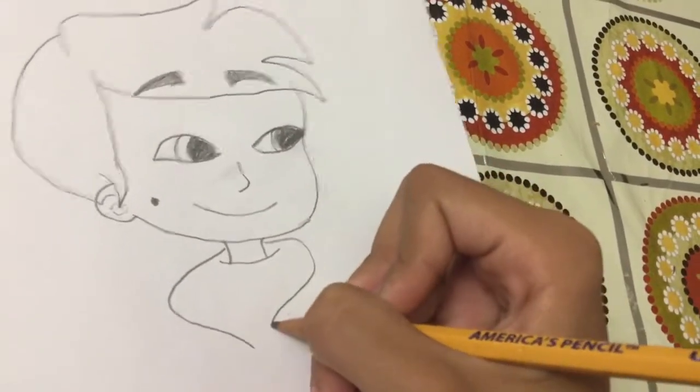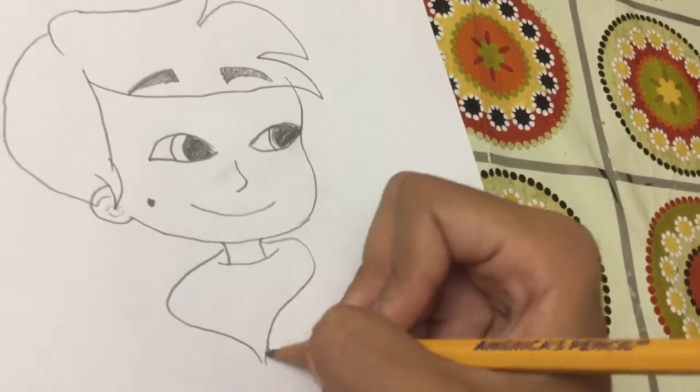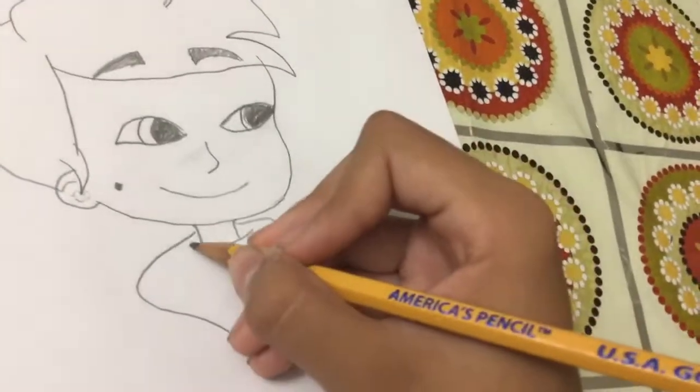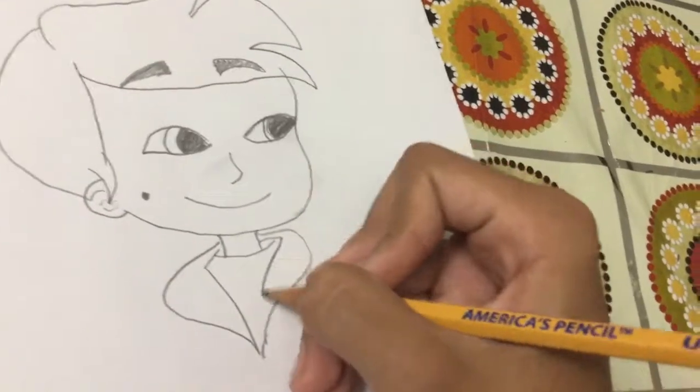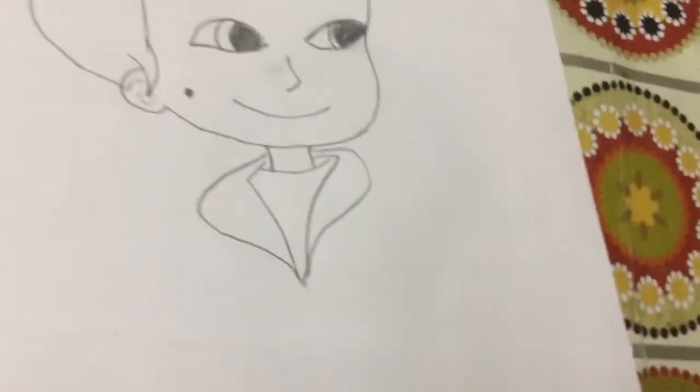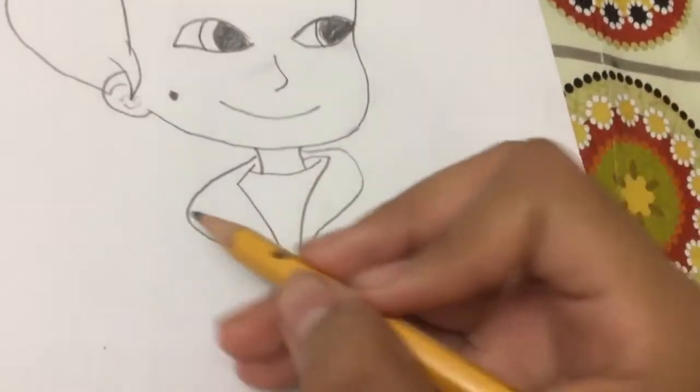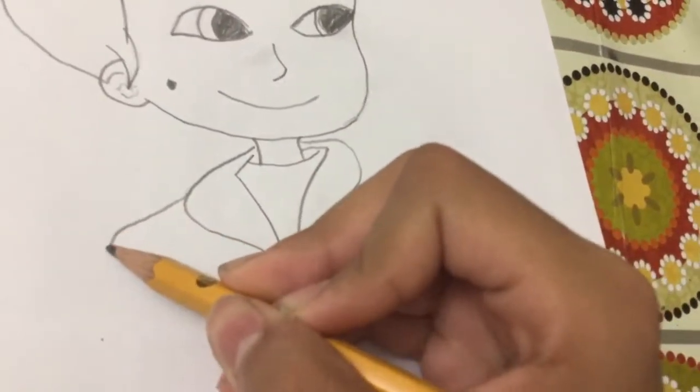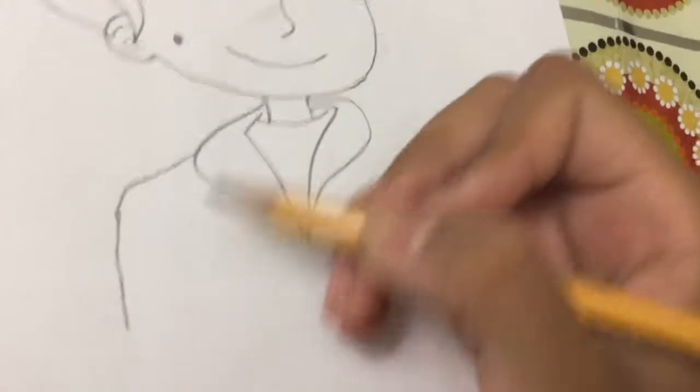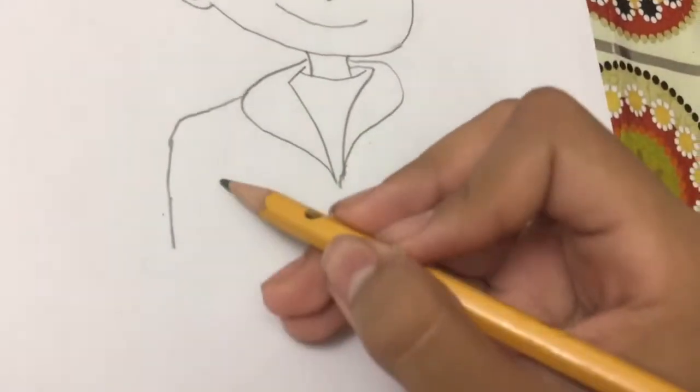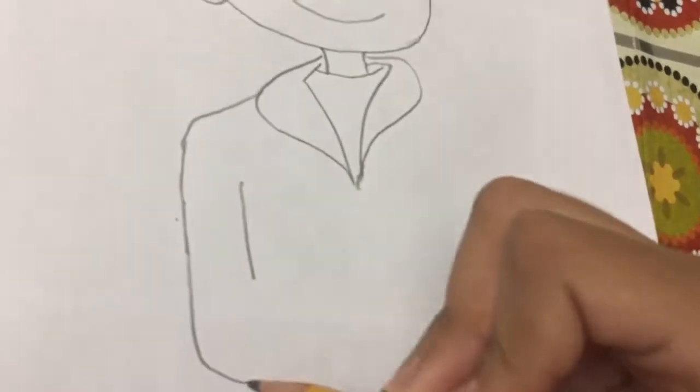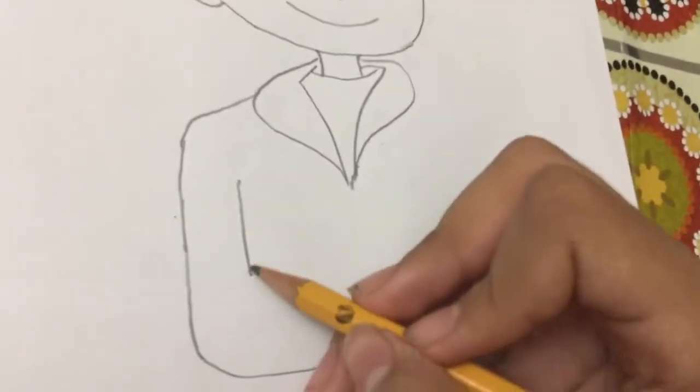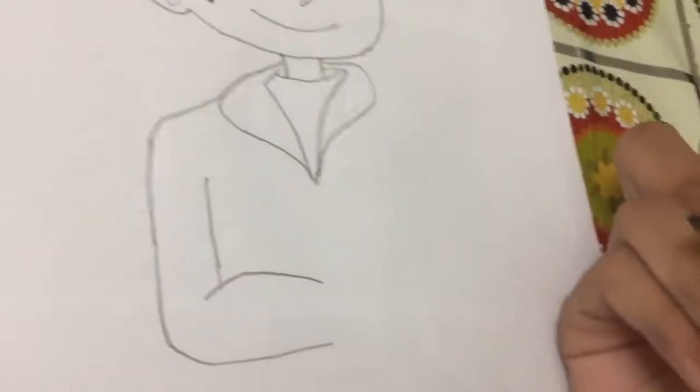And he has another, this part, like his shirt part, you can see from the jacket. And next, let's make his shoulder. Then come back in. And another line. And in. There you go.